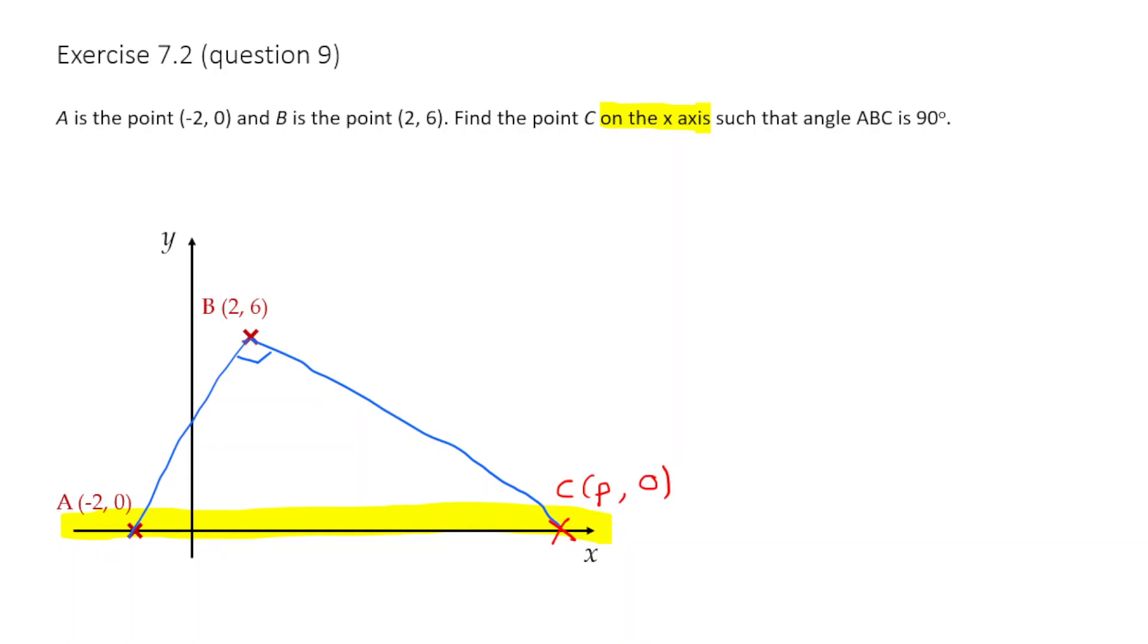Now, how do we go about solving it? Well, we're told that the angle ABC must be 90 degrees. Well, that tells us, therefore, that this gradient here of AB and this gradient here, BC, must be perpendicular. AB and BC must be perpendicular.